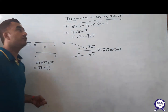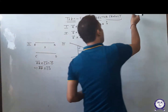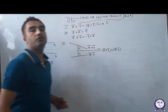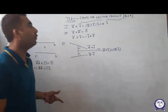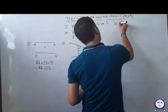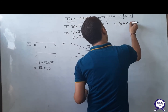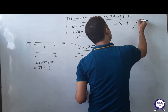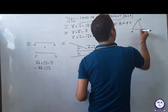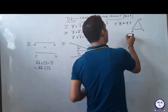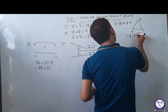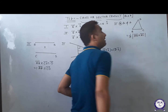CROSS or vector product is used when you have to find area in vectors. Like in the dot product when we need angle we use dot; if you need area, use CROSS. Area of triangle ABC equals half the magnitude of AB vector CROSS AC vector. These are direct formulas.